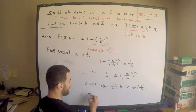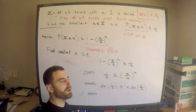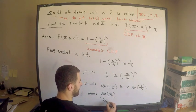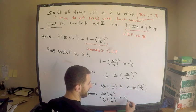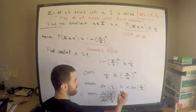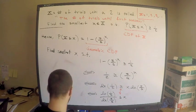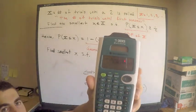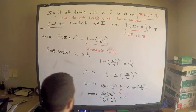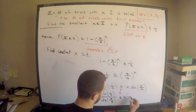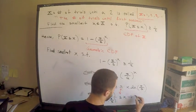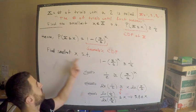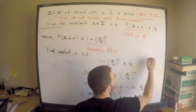The natural log of a fraction between zero and one is negative, so when dividing by ln of five sixths — which is negative — we must switch the inequality. Therefore: ln of one half divided by ln of five sixths is less than or equal to x. Computing this on a calculator gives approximately 3.8, so the smallest integer x satisfying the inequality is x equals 4.